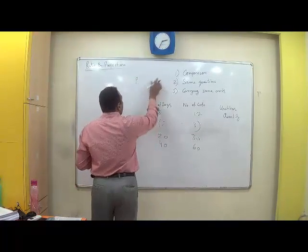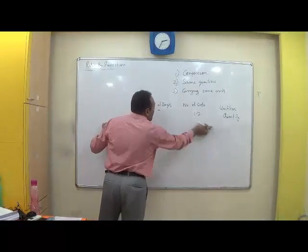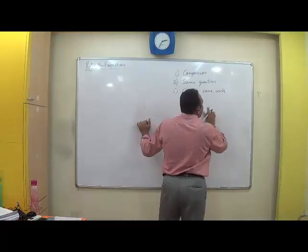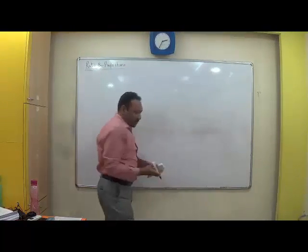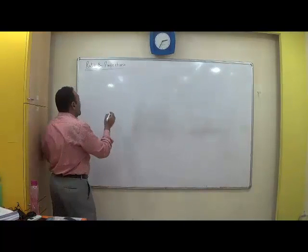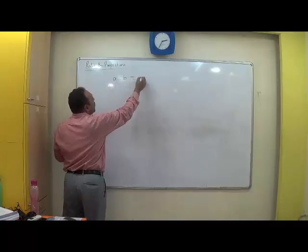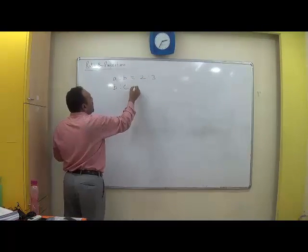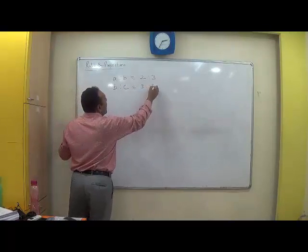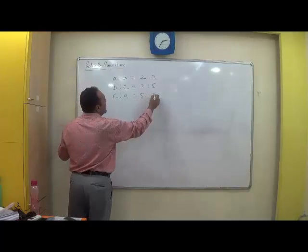Moving beyond, the first type of question which you will encounter in the area of ratio will be balancing of ratios. Now what do you mean balancing of ratios? There will be a question where it is said that A is to B is equal to 2 is to 3, B is to C is 3 is to 5, and C is to D is equal to 5 is to 7.